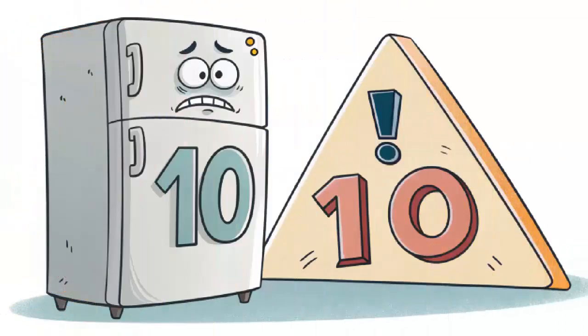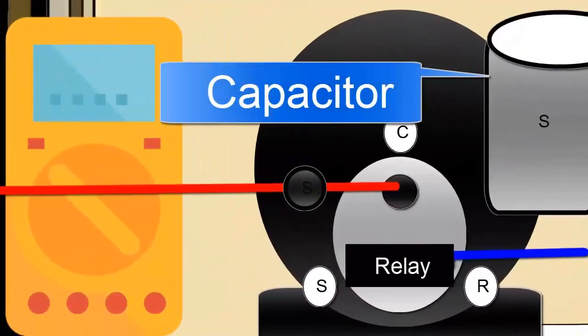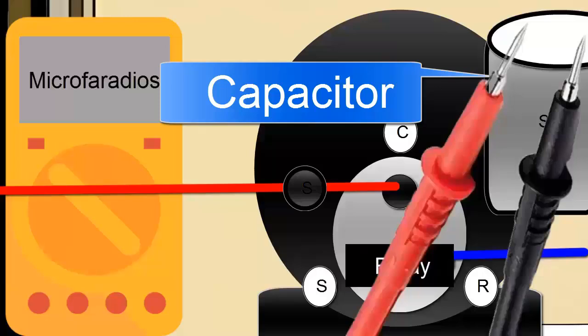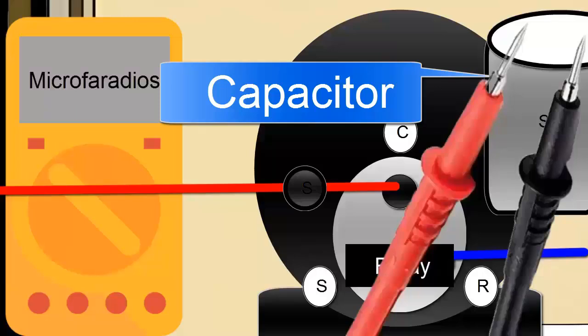8. Faulty start capacitor. The capacitor helps conventional non-inverter compressor start and maintain current. A damaged capacitor can cause the compressor to shut down shortly after starting its cycle.